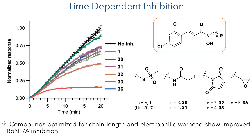Using this data, they designed a final series of compounds and investigated their time-dependent inhibition of BoNT-A. These included two alpha-iodo compounds with spacer lengths of three and four carbons, maleamides also with spacers of three and four carbons, and an epoxide with a chain length of five carbons. These were compared to a compound containing a methane thiosulfonate electrophile previously reported by Lynn et al., which showed good activity in vitro but not in vivo. This final series showed much better inhibition than previous libraries, with inhibition seen within several minutes of administration.